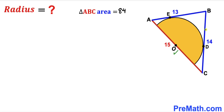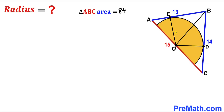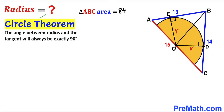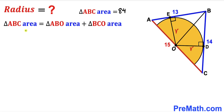Now let's connect center O with points B, D, and E. We can see that OE and OD are both radii of the semicircle, labeled as lowercase r. Recalling the circle theorem, the angle between the radius and the tangent line is always 90 degrees, so the angles at E and D are each 90 degrees, since these are our radii and those are our tangent lines.